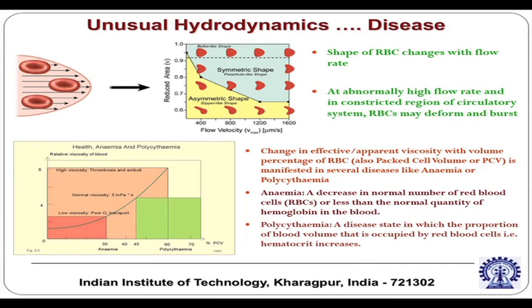At abnormally high flow rates and in a very constricted region, the red blood cell may deform and burst. This is a severe condition of unusual hydrodynamics — if the flow passage is very narrow, the red blood cell cannot sustain the shear and it will rupture, which can be a life-threatening condition.